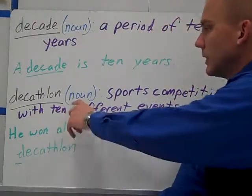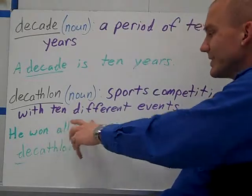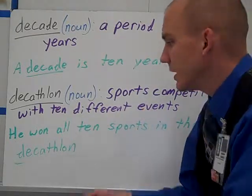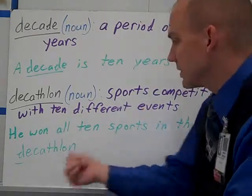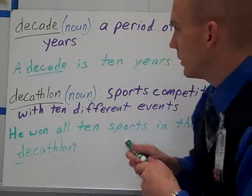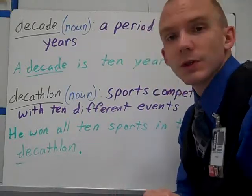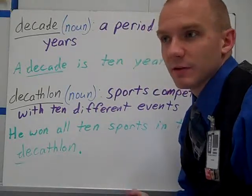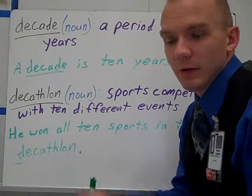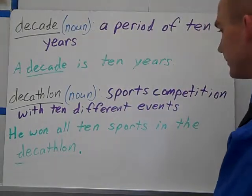Decathlon is a noun. It's a sports competition with 10 different events. He won all 10 sports in the decathlon. What this means is that there's some kind of sporting event that has 10 different events within it to determine the winner.